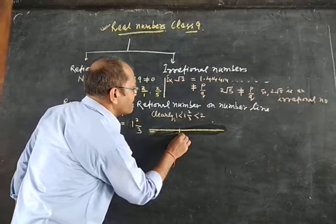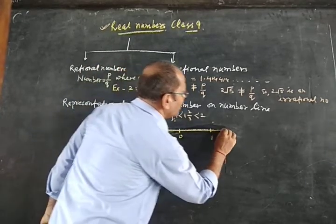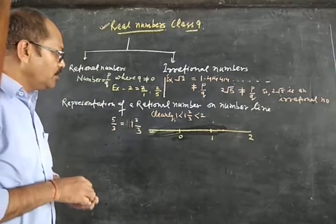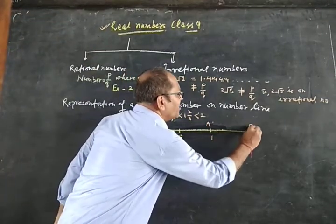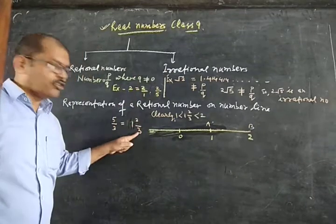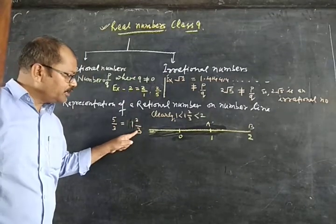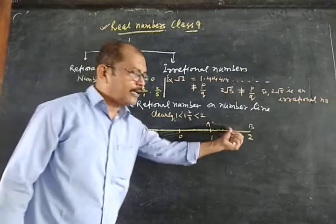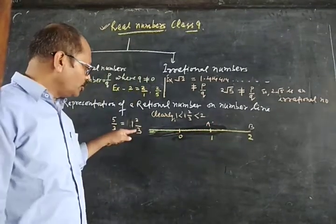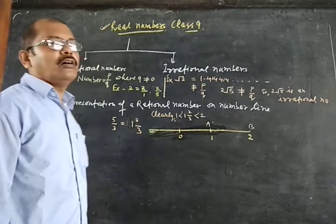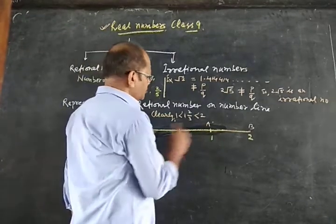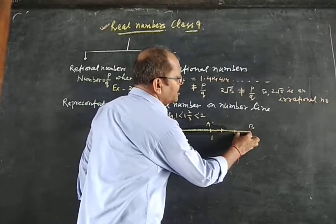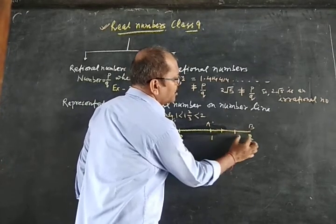Mark 0, then 1, then 2 — taking equal spacing. On the other side of 0 mark negative integers as well. This number is lying between 1 and 2. You have to consider the two nearby integers. Then divide AB — the segment between 1 and 2 — into 3 equal parts, according to the denominator. If the denominator is 3, divide into 3 equal parts; if 4, divide into 4 equal parts. So that gives us parts 1, 2, and 3.